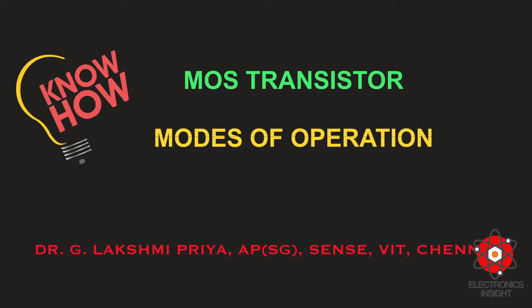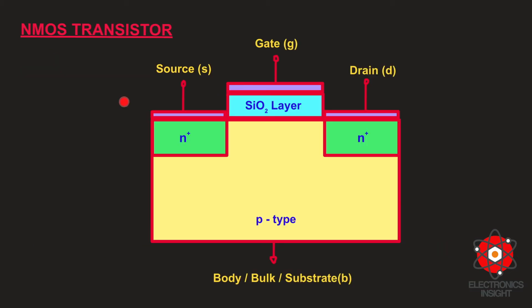Welcome to the next session on the know-how series. This video is about the different modes of operation involved in an NMOS transistor. The typical construction of an NMOS transistor is shown here. There are two major classifications of MOS transistors: enhancement mode MOS transistors and depletion type transistors.